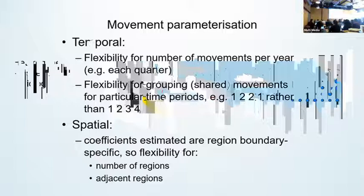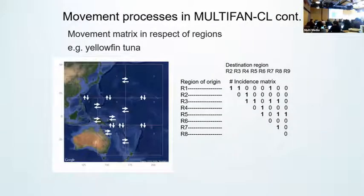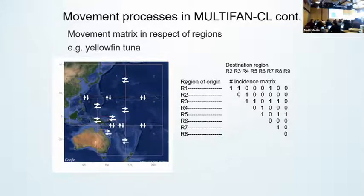The movement must take account of the model's temporal and spatial configuration and what assumptions are being made for the process. Therefore, there has to be flexibility in terms of the temporal factor and the timing of movements, and possibly the sharing of some of the movement coefficients among those time periods. And in terms of spatial, it needs the configuration for the number of regions and the regions that are adjacent. This is an example having nine regions — the typical Western Central Pacific Ocean tuna models — with the arrows indicating adjacency among regions.